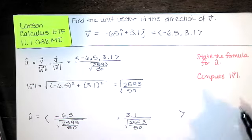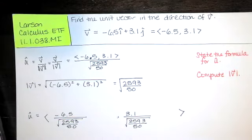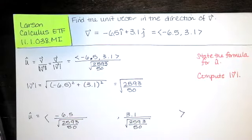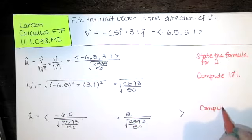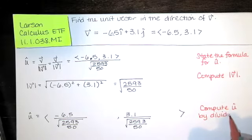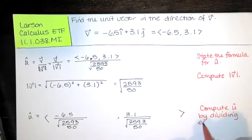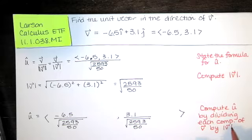Now, I don't think WebAssign will like that answer. I'm pretty sure this is not what they have in the answer key. But we can simplify this in order to make it look like the answer that they have online. So all we did at this point was we computed û by dividing each component of V by the magnitude of V. All right. Now we're just going to simplify.